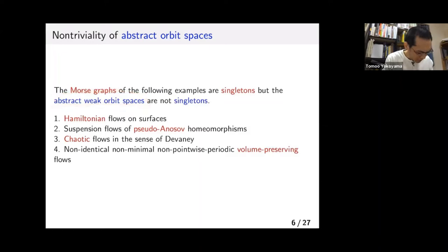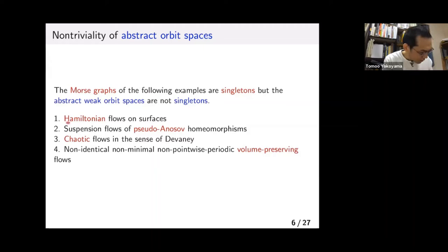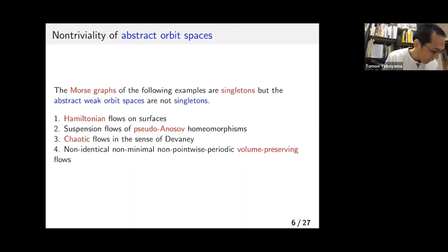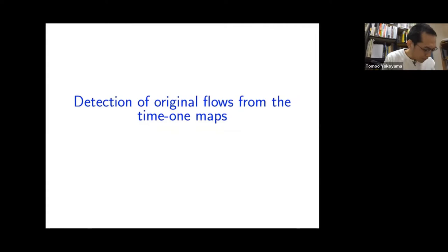We will explain the definition later, but using the abstract weak orbit space, we can capture the two-dimensional Hamiltonian flow, the shield arms of homeomorphism, caustic flow in the sense of Duveni, and the volume-preserving flow. The second motivation is the detecting problem: we'd like to detect the original flow from the time-one map.